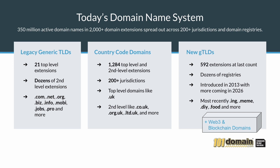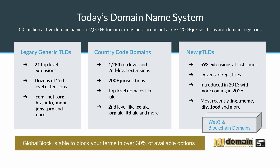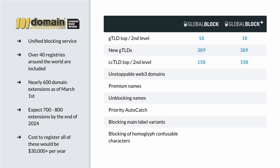All in all, GlobalBlock is able to block your term in over 30% of these available options. GlobalBlock, as it stands at this time, covers about 600 domain extensions across these groups and expects to end up covering between 700 to 800 extensions by year-end. If a company were to register a single name or trademark across all of these domain zones, it would cost upwards of $30,000 a year just for one term.